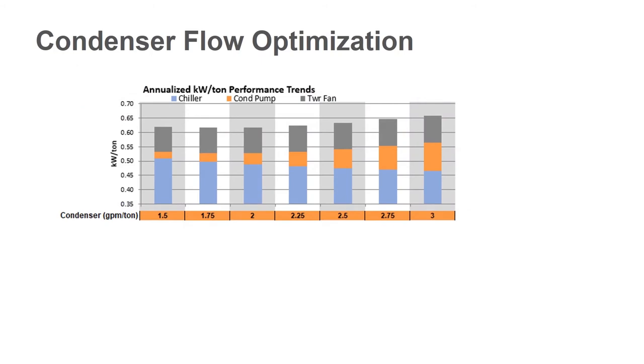After you have your inputs in and you hit calculate, you're going to end up with a graph that looks like this. What we're showing you here are the annualized KW per ton results for the system that you entered. On the far right-hand side, we have your 3 GPM per ton case. And then as you go to the left, we're going to go to lower flow down to 1.5 GPM per ton. Inside each one of those bar graphs, we're looking at the three different components. We're going to show the chiller results in blue, condenser pump in orange, and then the tower fan in gray.